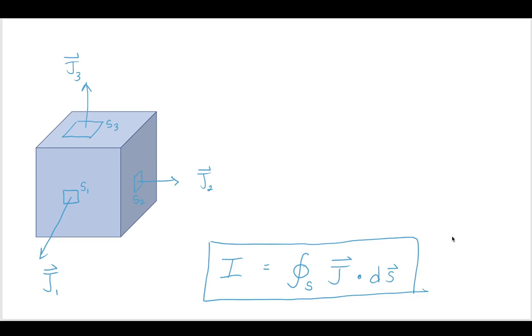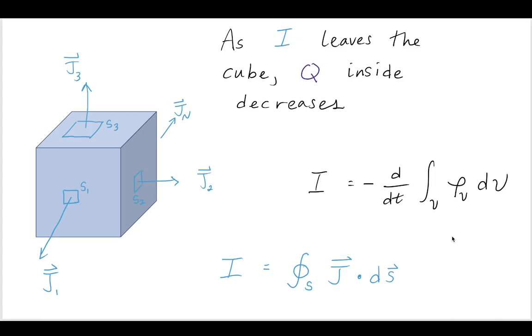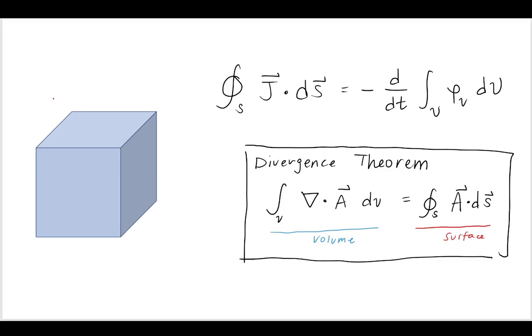And then we also have another relationship for I that was this closed-loop surface integral J·dS. Now we have two expressions for I. One is about the charge density, one is about the current density. So we can set those equal to each other. Up here, we can set these two expressions for I equal to each other.